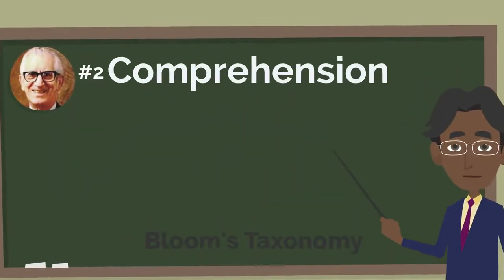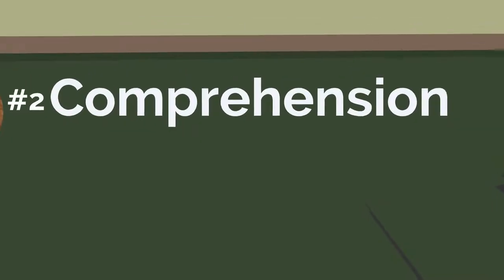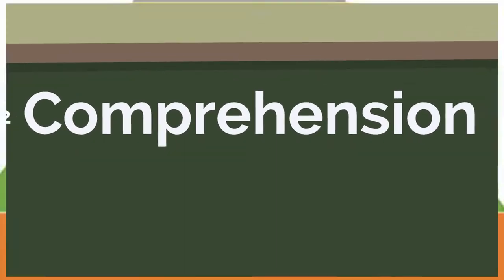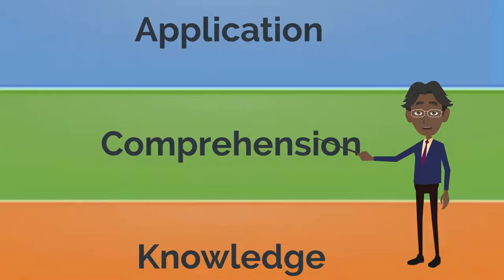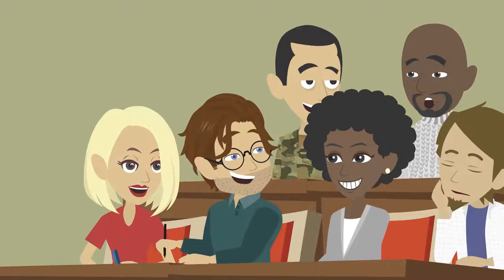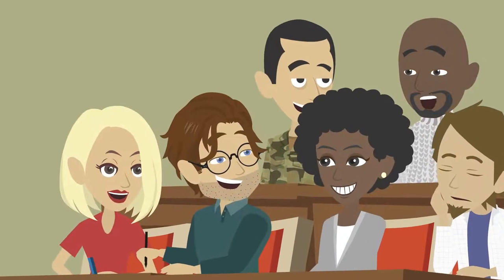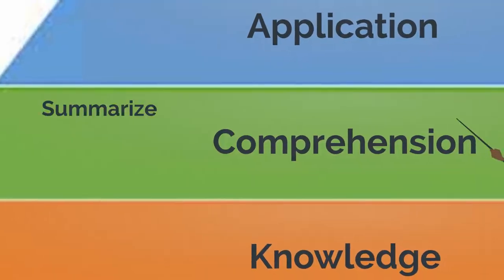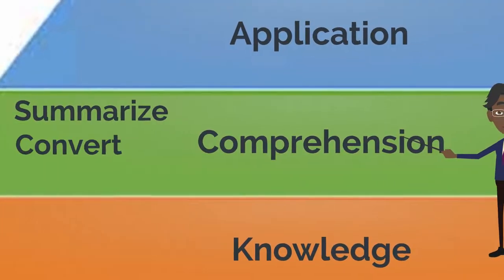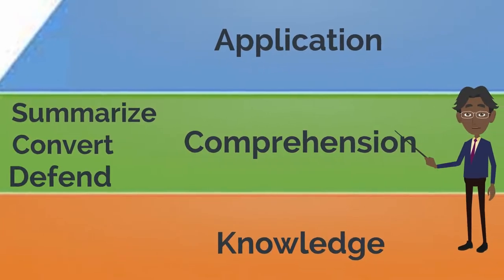Number 2: the comprehension level. At this level, students should be able to compare like terms, combine and interpret basic information. Action verbs at this level include words such as summarize, convert, and defend.